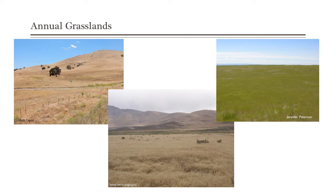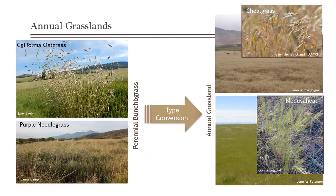What we have in the California grasslands is annual grass — this ecosystem has been converted from a perennial grass system. On the left is ripgut brome, in the middle is cheatgrass, and on the right is medusahead — all annual grasses that came from the Mediterranean region and really took over. At one time there were plants like California oat grass, purple needlegrass, and other native perennial bunchgrasses. Then there was a type conversion — the whole ecosystem changed to an annual grassland. Californian land managers have largely accepted managing annual grasslands, while in Idaho and much of the Great Basin we're still focused on maintaining perennial grasses.